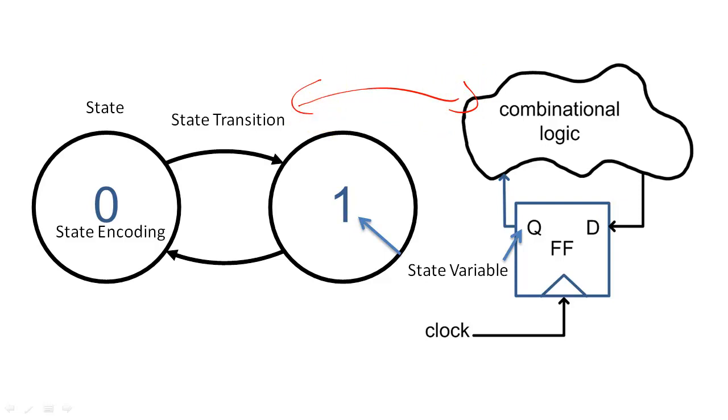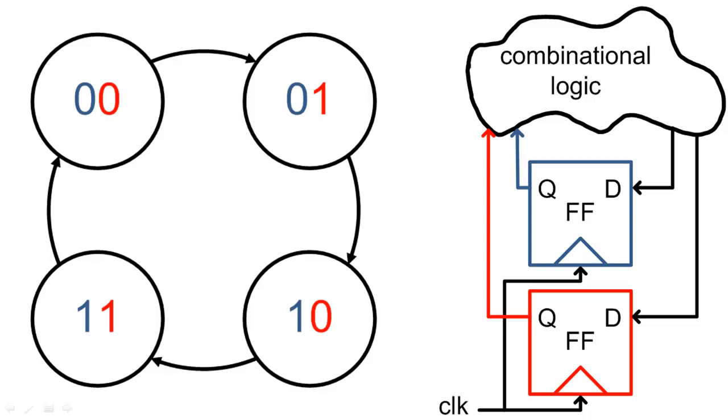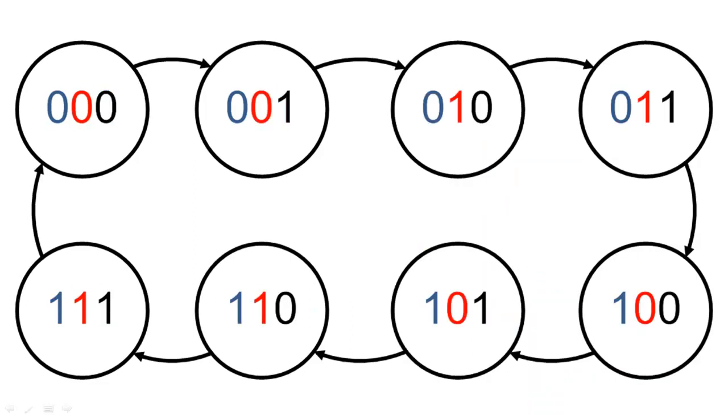If we add another flip-flop to the system, we add one more state variable to the encodings, but we double the number of states that we can encode. As one more example, if we have three flip-flops, we have three state variables, and we can encode up to eight unique states for the system.